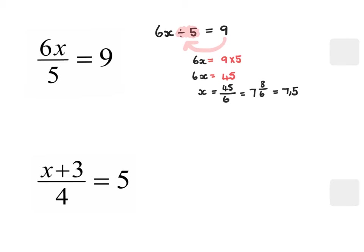To check this, I like to think of it as: what number divided by 5 gives me 9? That number is 45. So another way of looking at it is by saying 6x must be 45, and then if you know that 6x is 45, then x must be 7 and a half — almost like using the block method from primary school.